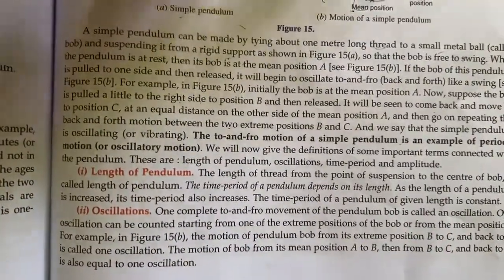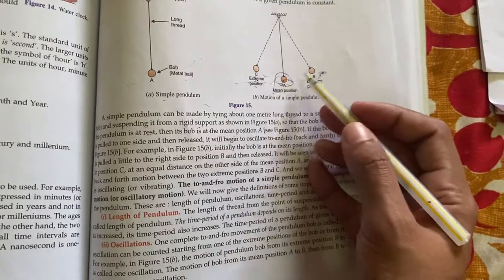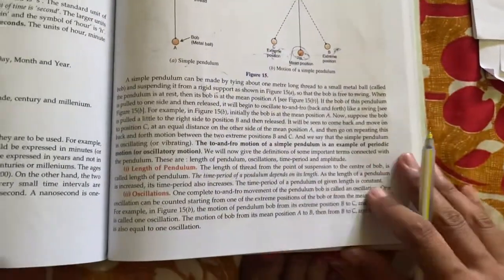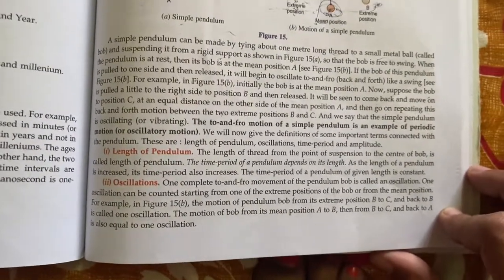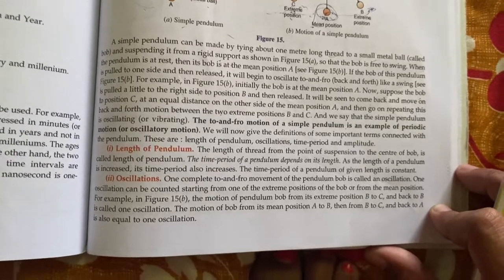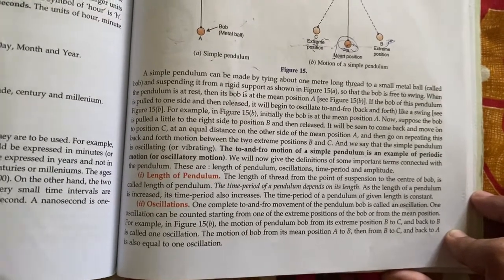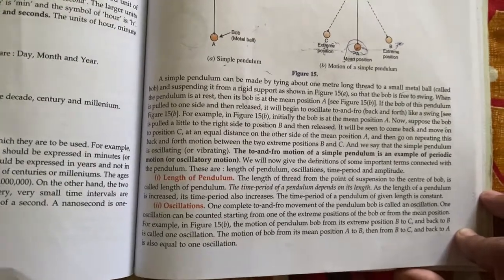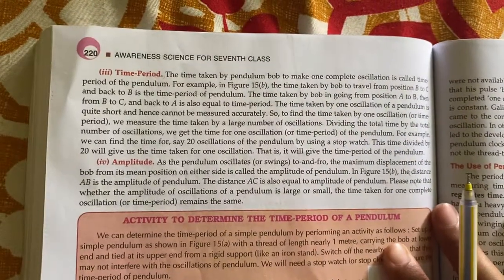One complete to and fro movement of pendulum bob is called an oscillation. Motion of bob from mean position A to B, then B to C, then C to A.